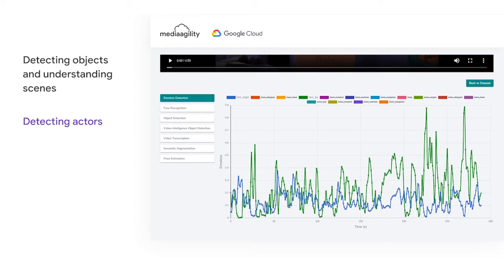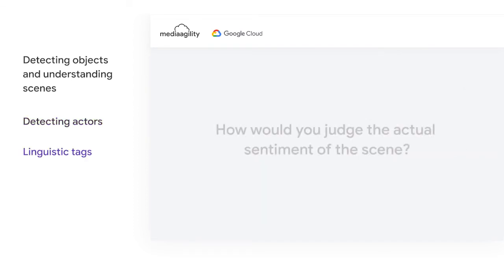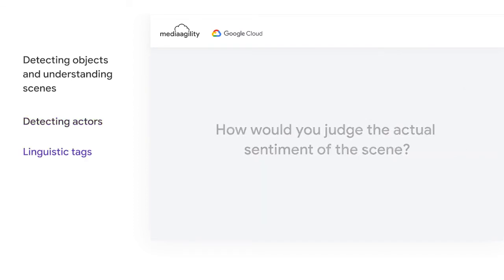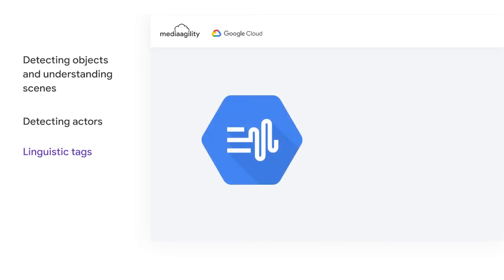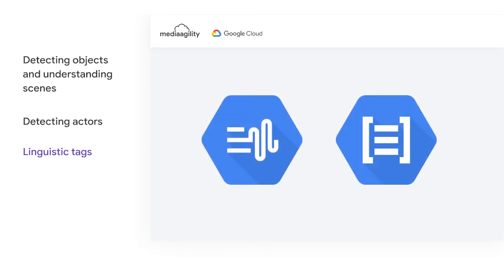Now let's consider a case when some actors are talking sarcastically. How would you judge the actual sentiment of the scene? To get that, we need technology to analyze and understand the language. This is where speech translation and NLP come into the picture. Using these, we can find the sentiments based on words as well.